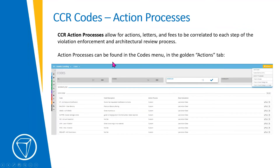CC&R action processes on each code allow for actions, letters, and fees to be correlated to each step of the violation enforcement or architectural review process. Action processes are found in the codes menu under the golden actions tab — just like we go to codes to access the CC&R codes, that's where we go to get to these action processes.